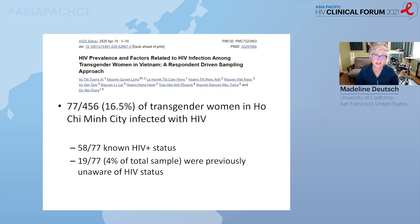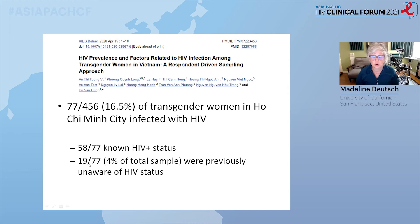A respondent-driven sampling study of HIV rates among trans women in Ho Chi Minh City found a 16.5% HIV prevalence. Furthermore, 4% of the sample — 19 out of 456 — which is nearly a quarter of those who were HIV-positive, were unaware of their HIV status until this study tested them. This is very concerning.